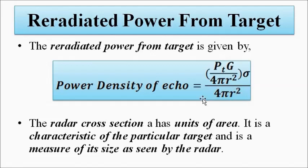The radar cross section σ has units of area. It is unique for a particular target and differs across targets — it will be different for a ship, a plane, a bus, a truck, a small vehicle, or a human being. It depends on the size of the target as seen by the radar.